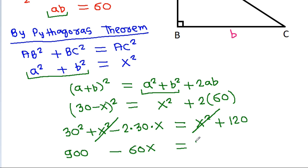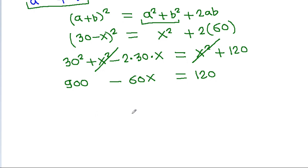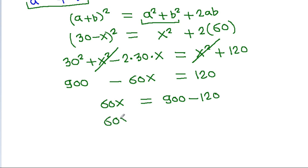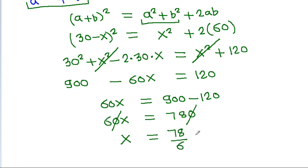This gives us that the left side equals 120, and 60X equals 900 minus 120. So 60X equals 780, and dividing, X equals 78 divided by 6, which equals 13.